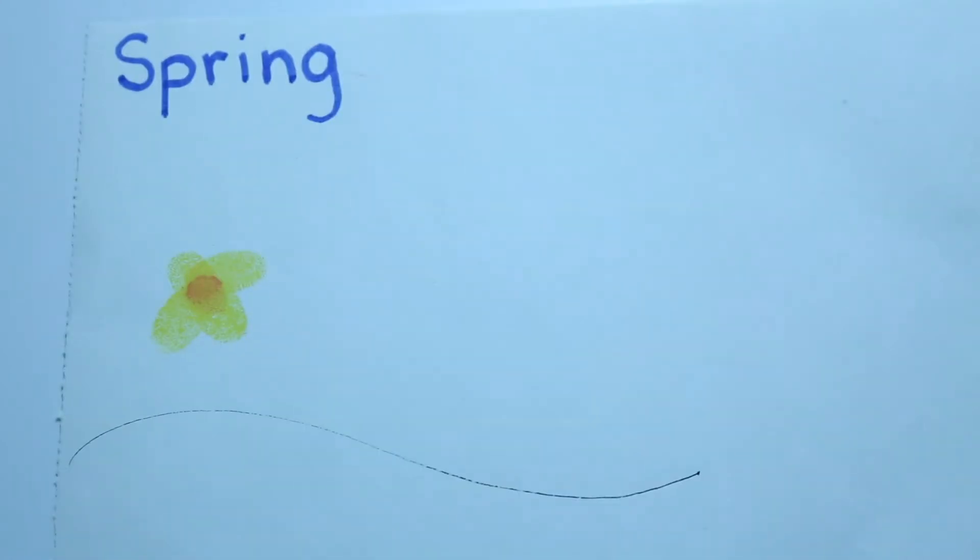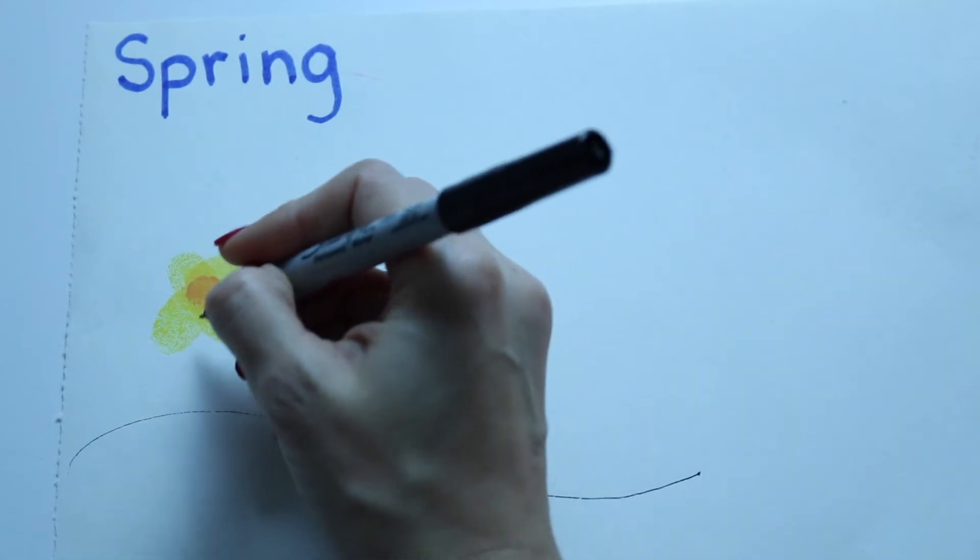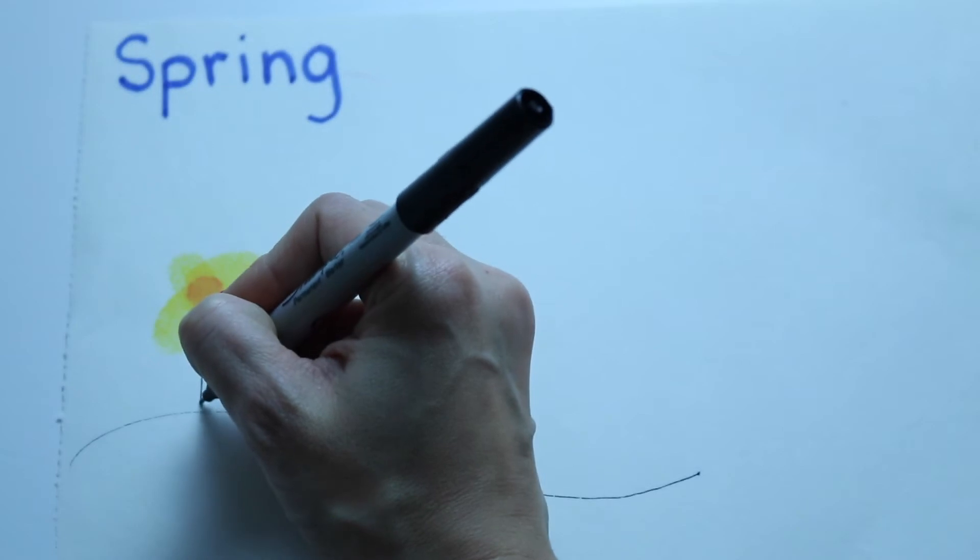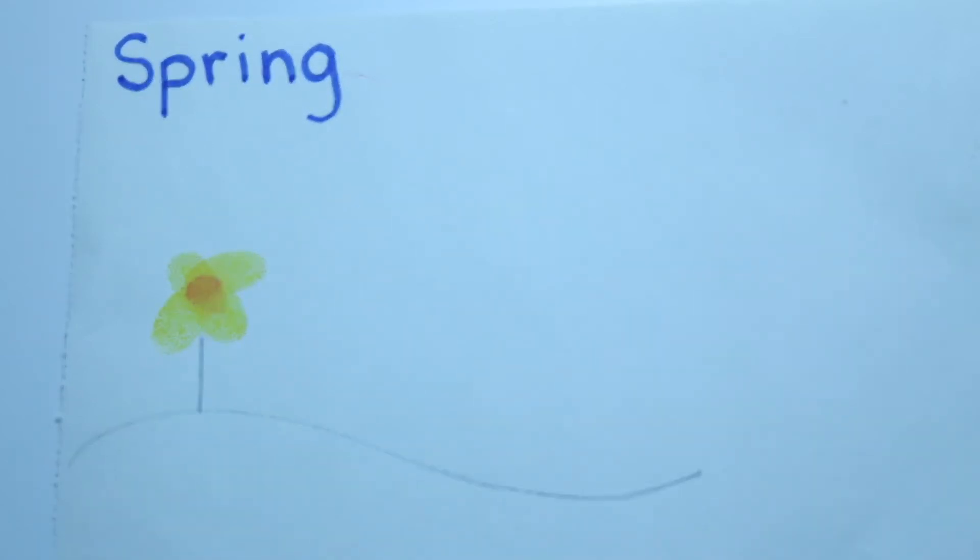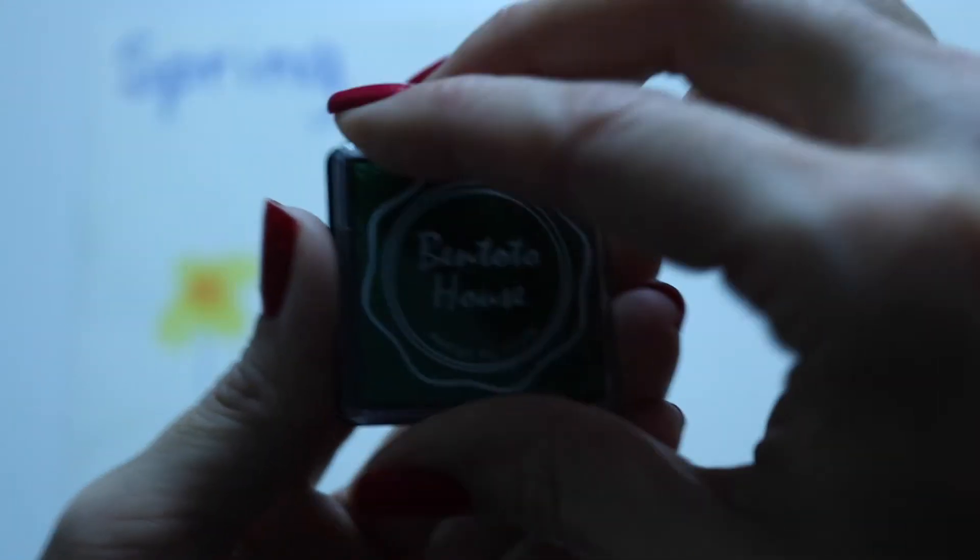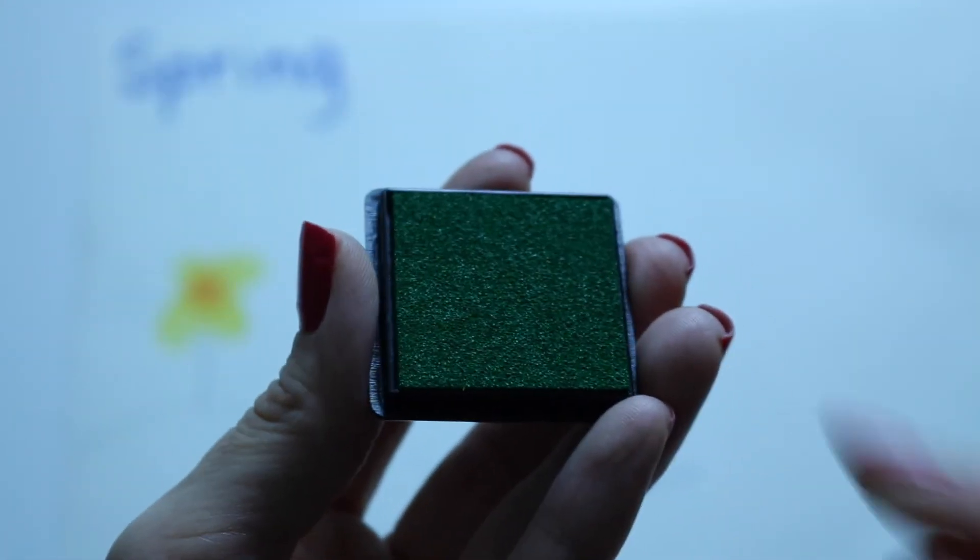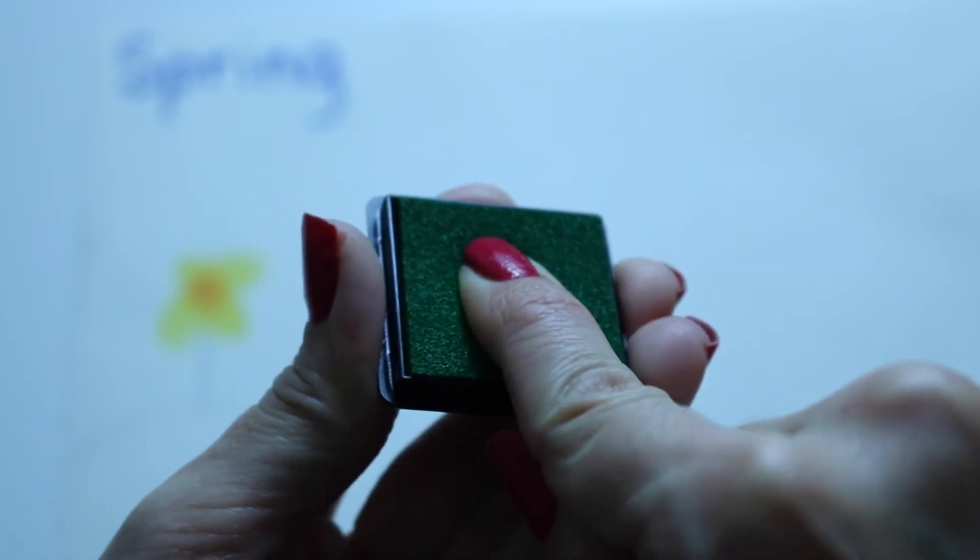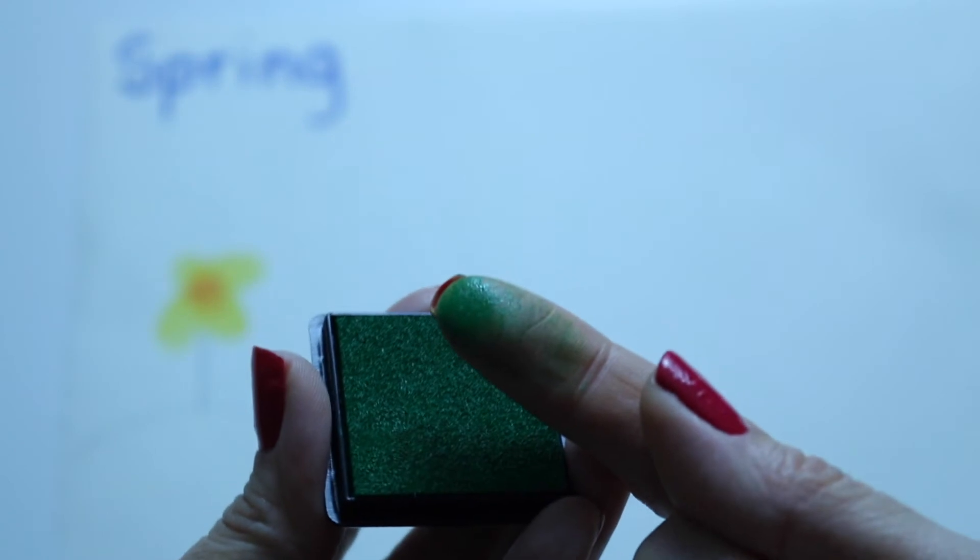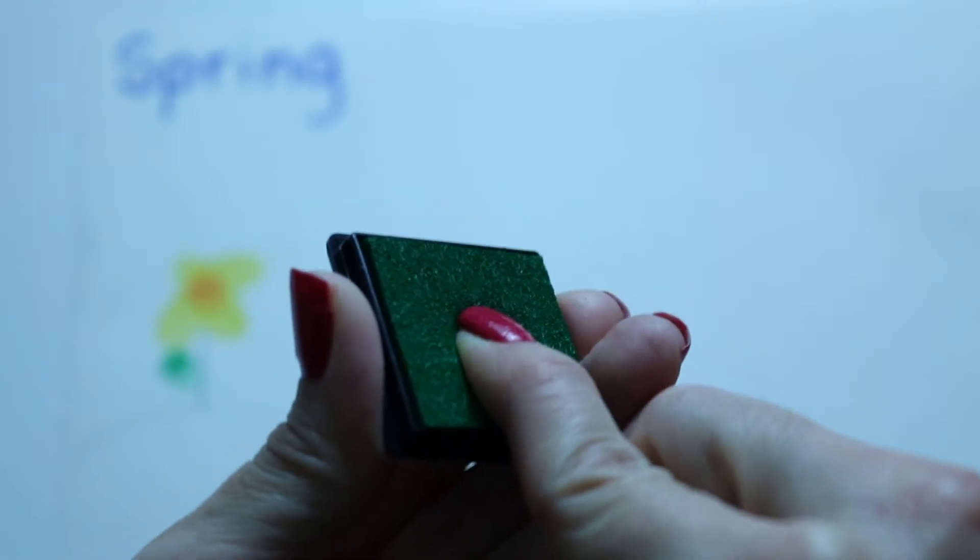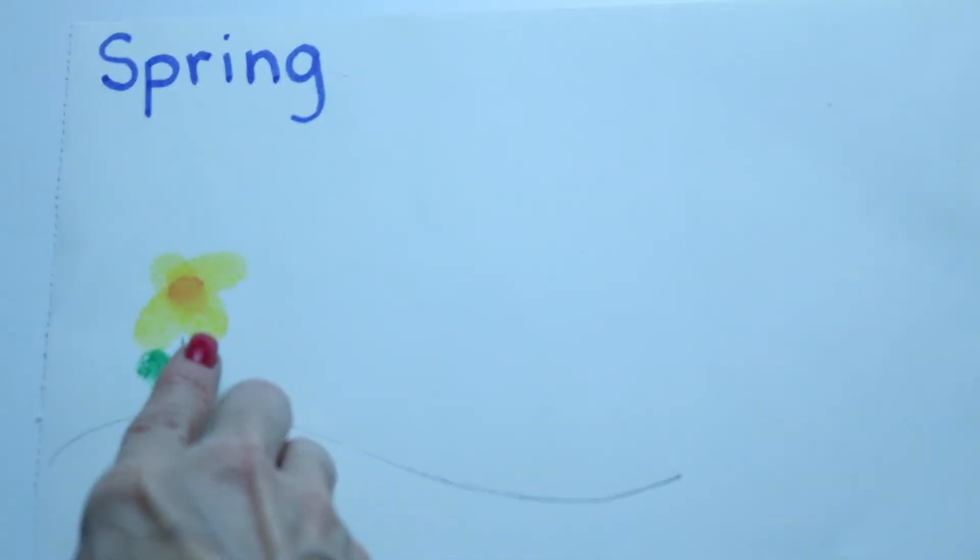Now I'm going to put it right in the middle. Now I need my stem, which I'm going to do with my marker, all the way down. I'm going to put two green leaves on this side. Take my green. Place my clean finger. Press. It's green. One on this side. Get a little bit more green. And one on this side. What do you guys think? Pretty good, huh?